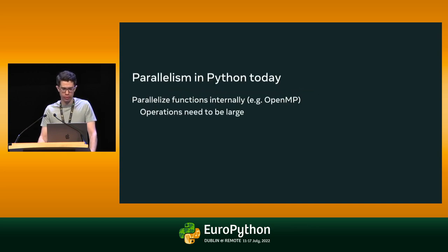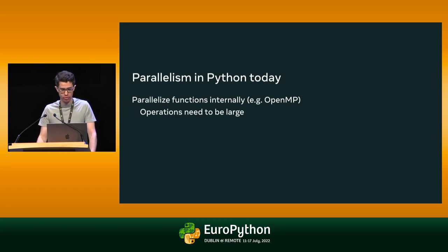Even with the GIL, there are a number of ways to parallelize Python programs today, but they all have substantial limitations. First, in C API extensions, you can parallelize operations internally in a way that's invisible to Python. For example, scikit-learn uses OpenMP to parallelize its k-means operation. Scikit-learn distributes the work to a number of threads, waits for them to finish, and aggregates the results. This works well when individual operations are large enough to be efficiently parallelized, but not when there are a lot of small steps. Libraries like scikit-learn, PyTorch, and some versions of NumPy and SciPy use this technique.